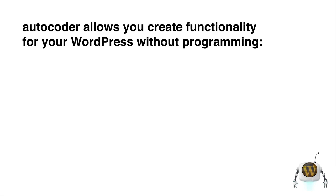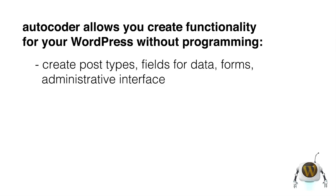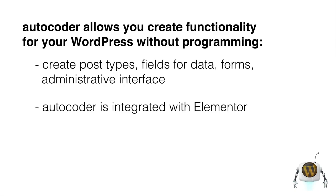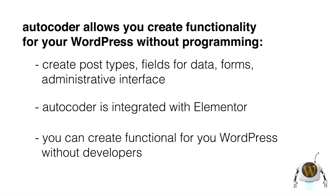Autocoder is a web service that allows you to create functionality for your WordPress site without programming. By using the Autocoder service, you can create structures inside WordPress such as post types, fields for data, forms for user interaction, and an administrative interface for managing all of these features. Autocoder is integrated with the Elementor visual page builder, meaning you can create a functional website on WordPress without writing code and without developers — completely in visual mode.